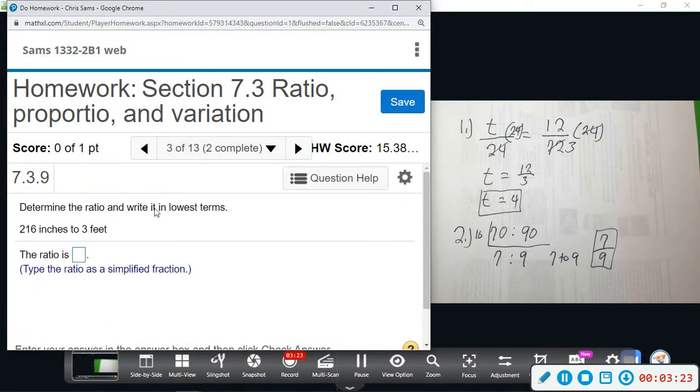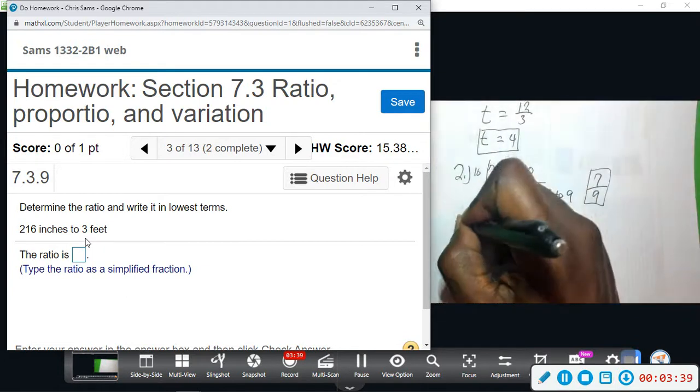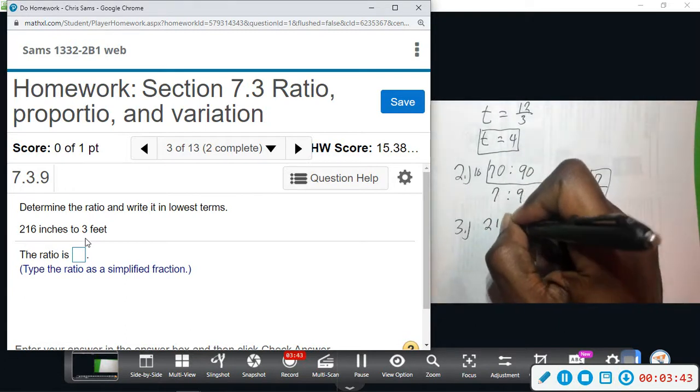All right, so this one, we want to determine the ratio, write it in lowest terms: 216 inches, three feet. Notice there's a difference in units. The units is different, so what we need to do is convert them to the same units. So I'm going to say 216 inches.